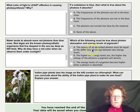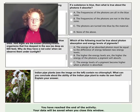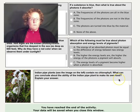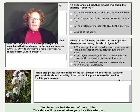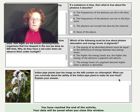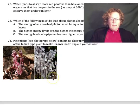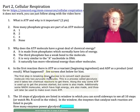Last question: Indian pipe plants contain no chlorophyll. What can you conclude about the ability of the Indian pipe plant to make its own food? If it doesn't have chlorophyll or other pigments like red or yellow, can it absorb any of the light to capture that energy to make its own food? This is the end of part one of the lab. The next video, we'll do part two together — cellular respiration.